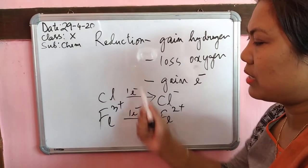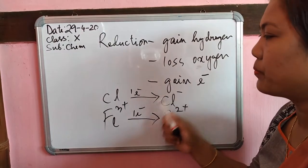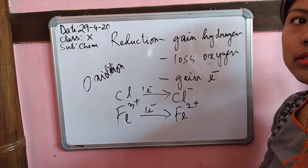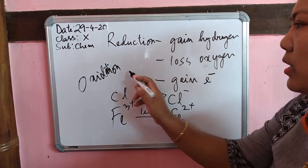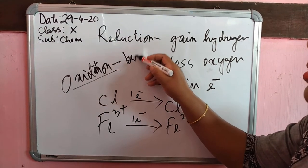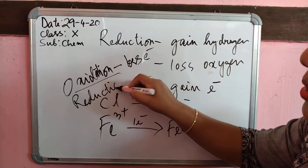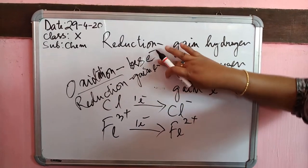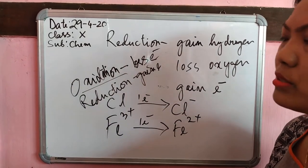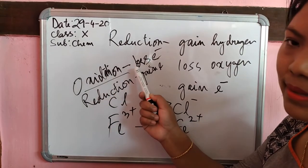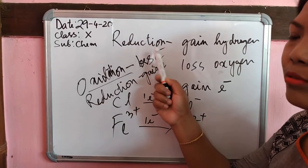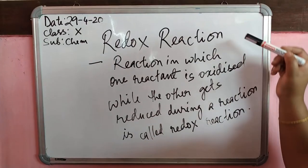Another example: Fe³⁺, after gaining one electron, becomes Fe²⁺. This is also an example of a reduction reaction. So the key definitions are: oxidation is loss of electron, and reduction is gain of electron. This is a very important definition that you will encounter more in higher classes.